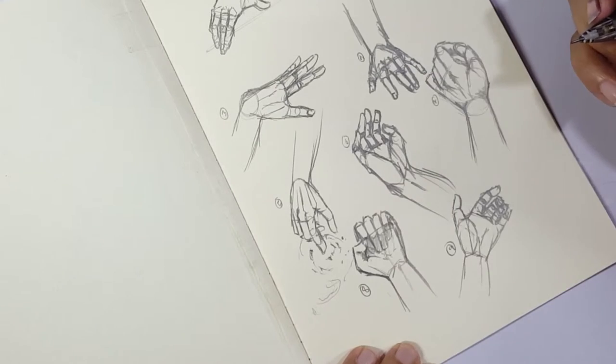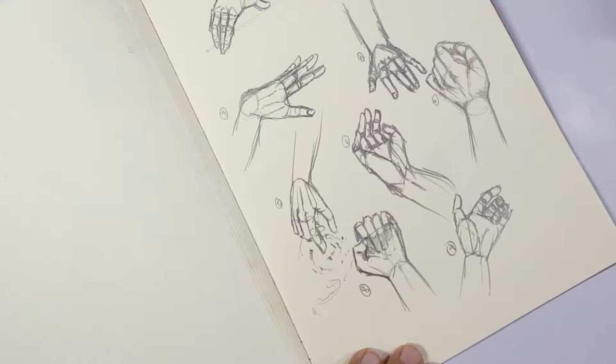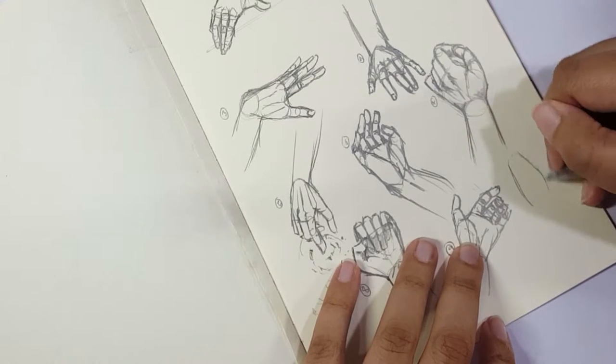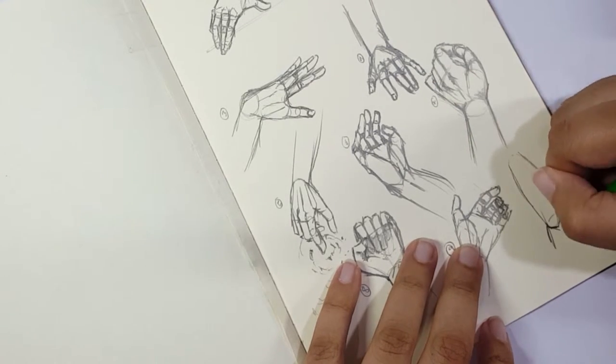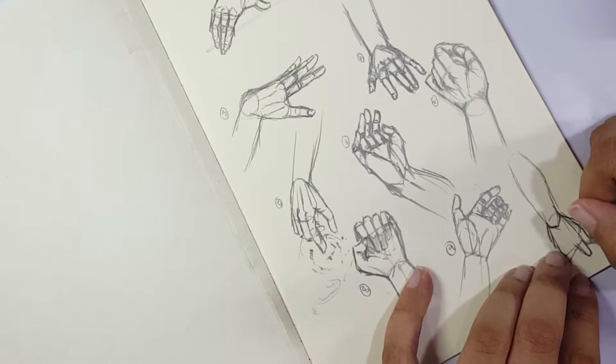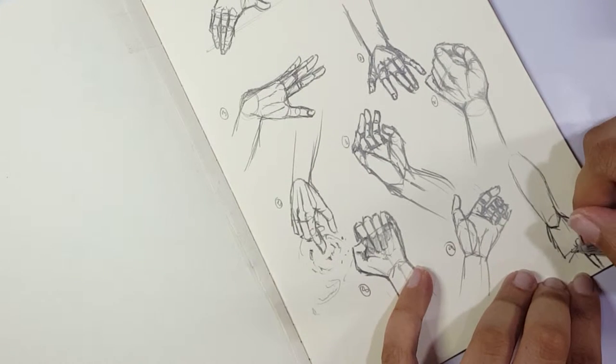Because where the thumb is, and how long the thumb length is, dictates also how long the palm and the rest of the fingers will be. So if I determine where the thumb or how the thumb looks like, the rest of it is easy.